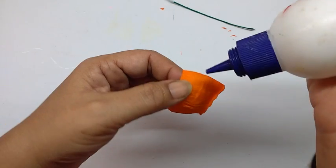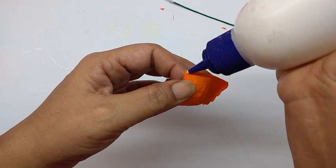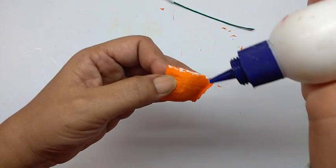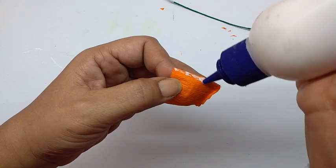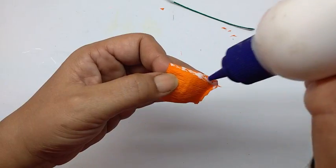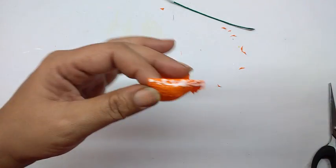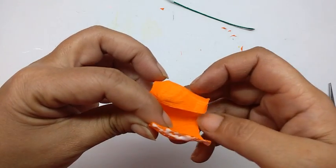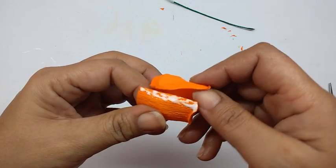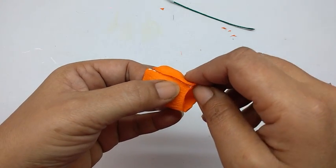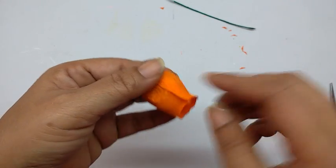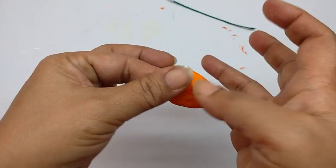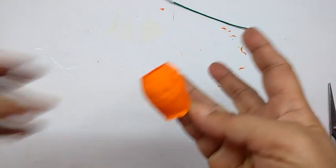Apply glue on one edge and towards the scalloped edge apply it at a slant. Then just stick the other side on it. This is what it looks like.